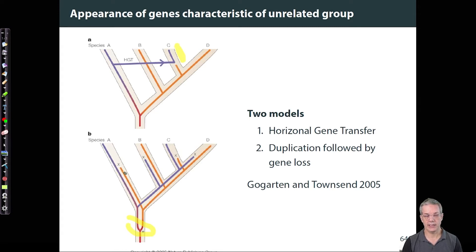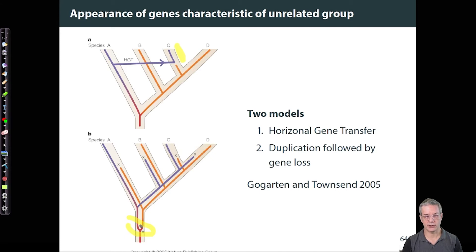And so in A and C, the orange paralog is lost. And in B and D, the purple paralog is lost. And so if we look at the different colors, like C and D, we would have to go all the way back to this early duplication event, despite the fact that C and D are closely related as species.